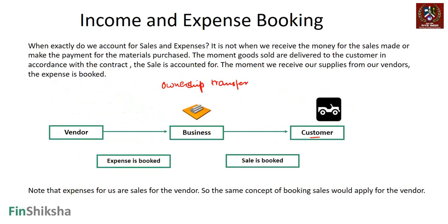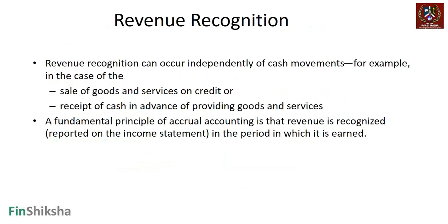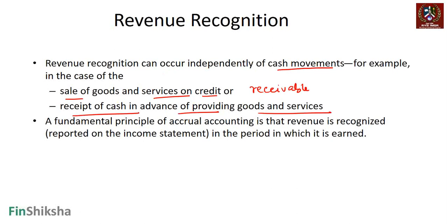For example, in services businesses, how do you determine the point of ownership transfer? Revenue recognition can occur independently of any cash movements — cash flow has nothing to do with revenue recognition. The sale of goods and services can happen on credit, where a receivable comes in, and receipt of cash in advance of providing goods and services can also happen. Cash could come in at a different point, but revenue gets recognized based on specific principles.